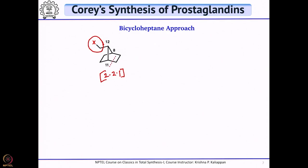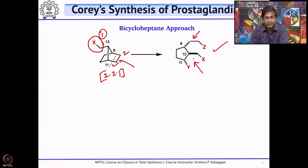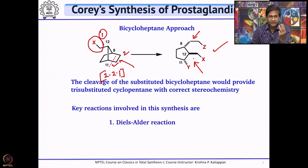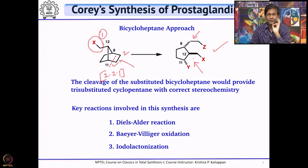What he wants to do is cleave a bond in the bicyclo[2.2.1] system. When you cleave this bond, it converts into a cyclopentane with two side chains. You can see side chains 1 and 2 can be easily introduced. The cleaving of that bond is very important, and how you cleave it allows you to fix the stereocenters of these 3 contiguous carbons. That was his plan. The whole synthesis involved 3 key reactions: (1) Diels-Alder reaction, (2) Baeyer-Villiger oxidation, and (3) Iodolactonization.